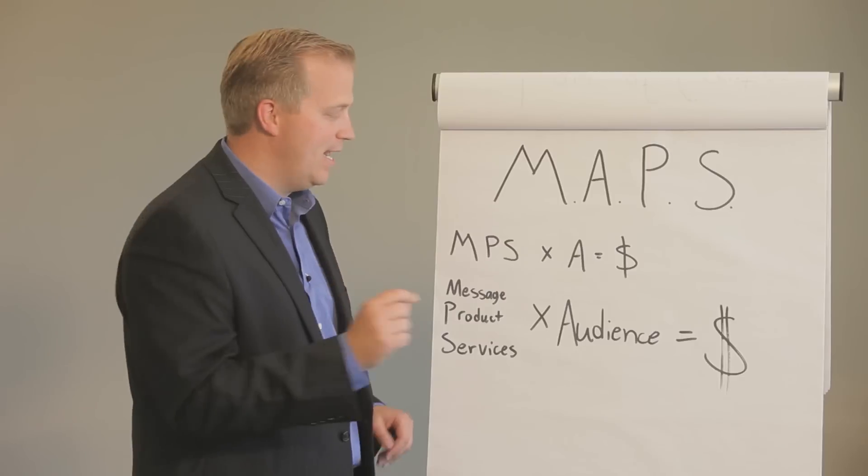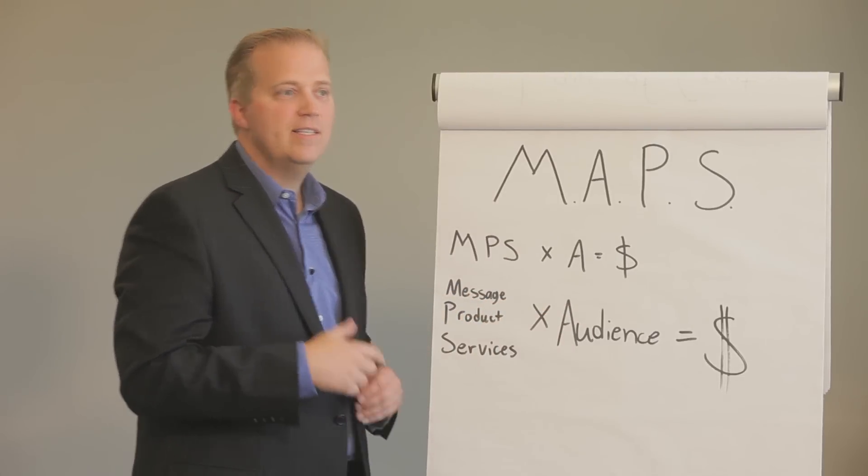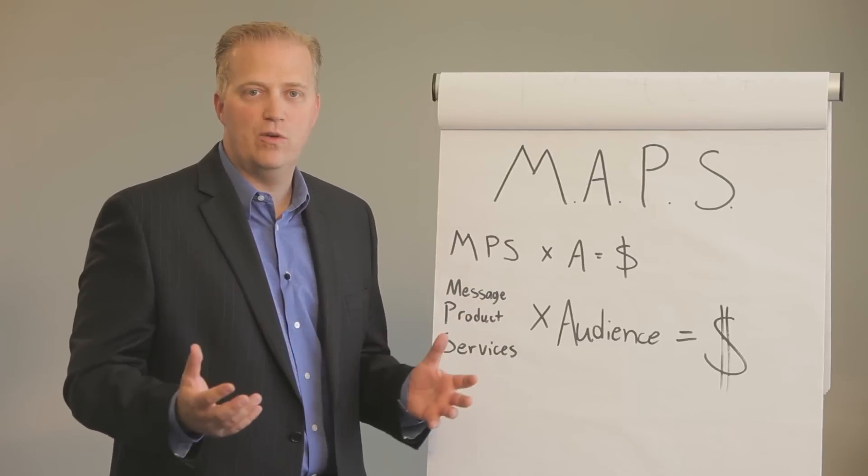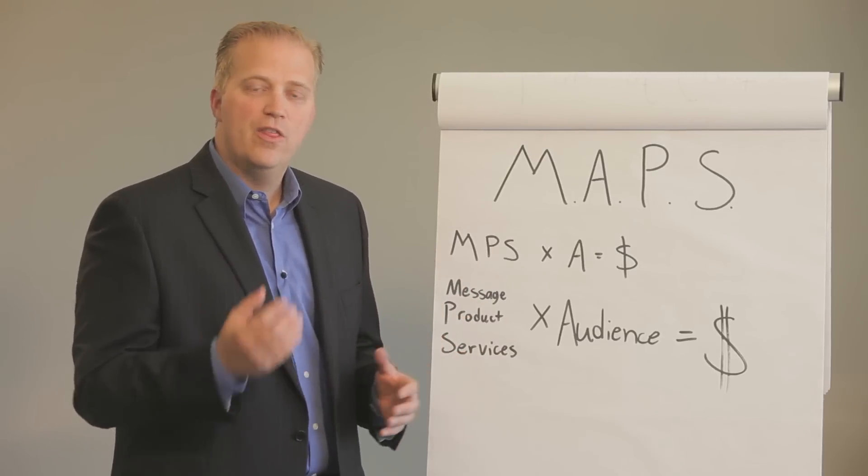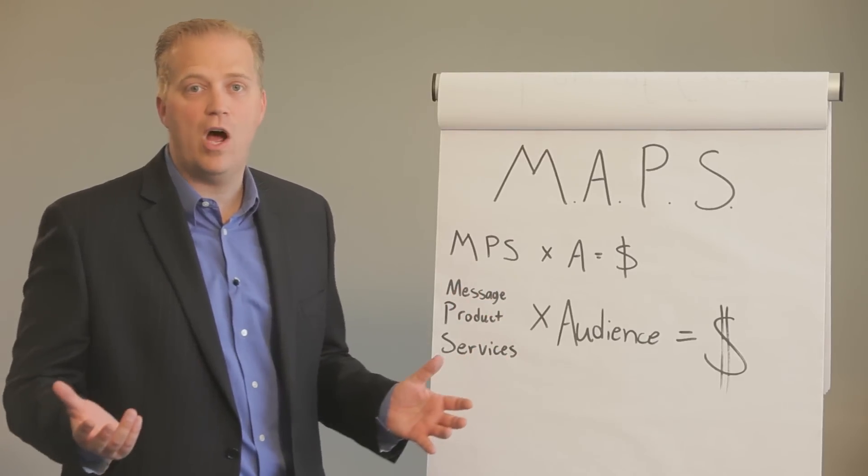That's where most people miss it. X marks the spot on a treasure map, you have to times by an audience. Take Oprah Winfrey when she was at her highest. She had an audience of millions of viewers. Those times the audience of her product, service, and messages made her millions, in fact made her over a billion dollars.